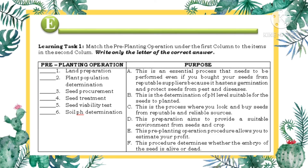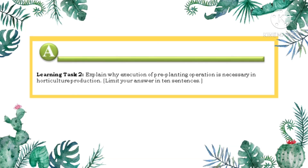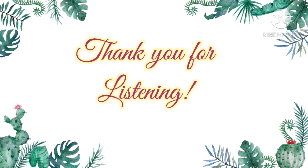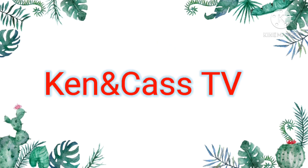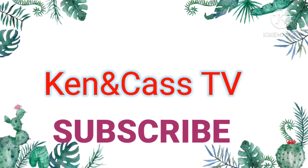So now, after the discussion, your task is to answer Learning Task 1 from page 18 of your self-learning module. And for the assimilation, Learning Task 2: explain why the execution of pre-planting operations is necessary in horticulture production. Limit your answer to 10 sentences. Thank you for listening. Have a nice day! I hope you learned something from this video. For more videos and updates, don't forget to click the subscribe button and hit the notification bell. God bless everyone!